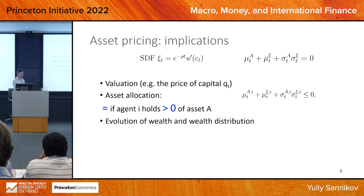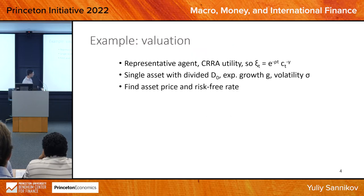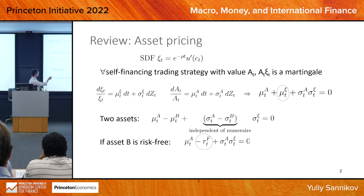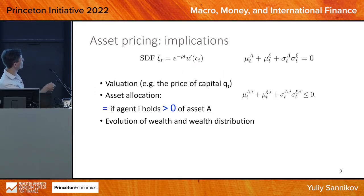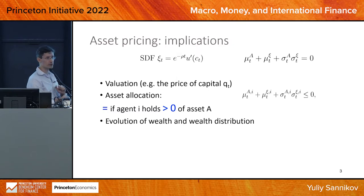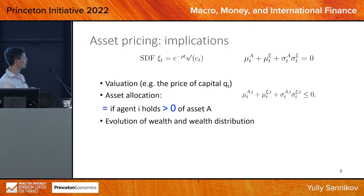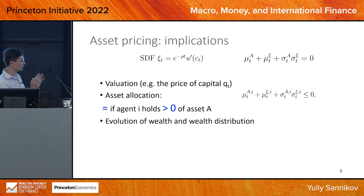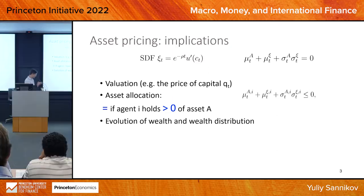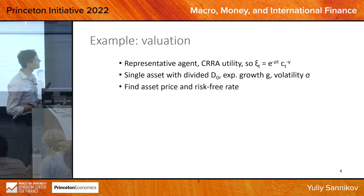Next, I want to give examples of how this asset pricing relationship is useful for finding asset value, asset allocation, and solving for the evolution of wealth distribution in the macro model. I'm working toward asking you to do this on a simple model that can be solved in closed form. First, I will do all the steps in another context.